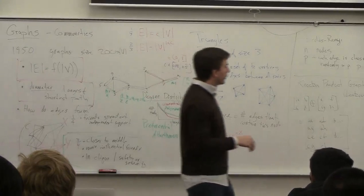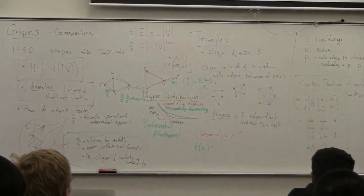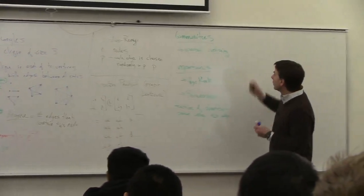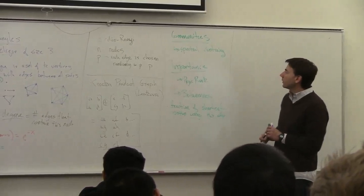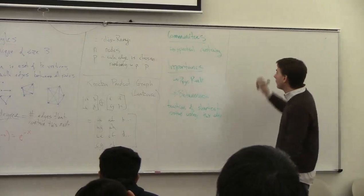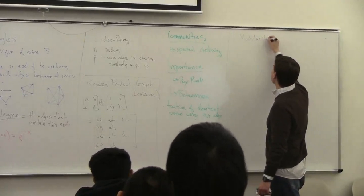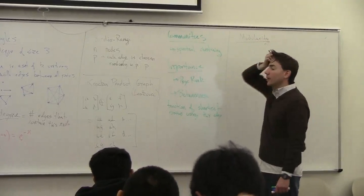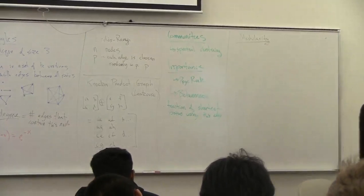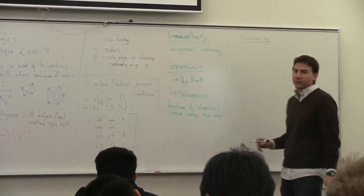Betweenness is a really useful property but it's slowly calculated and hard to approximate. Now let me say one more thing about finding communities in graphs — the idea of modularity.